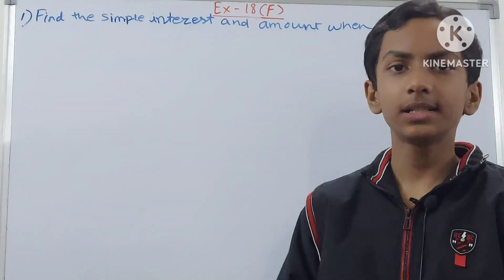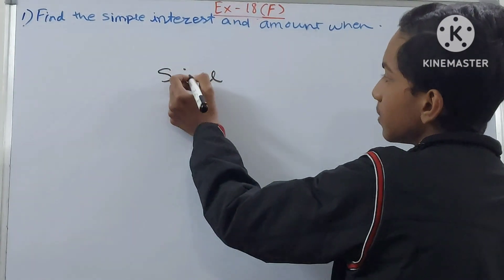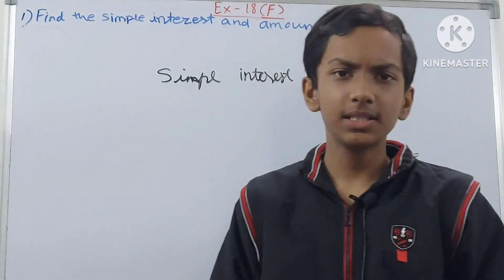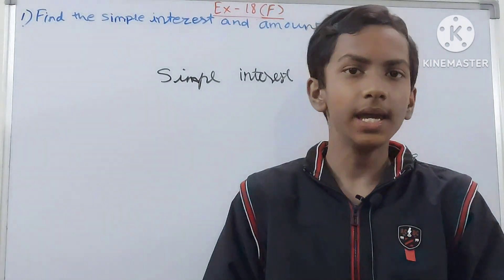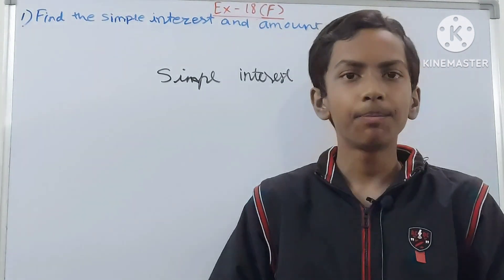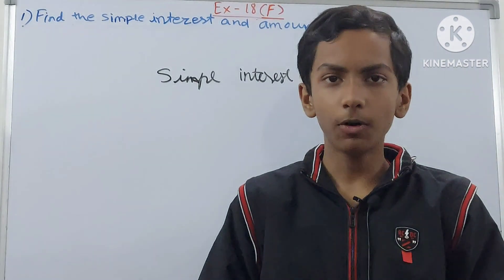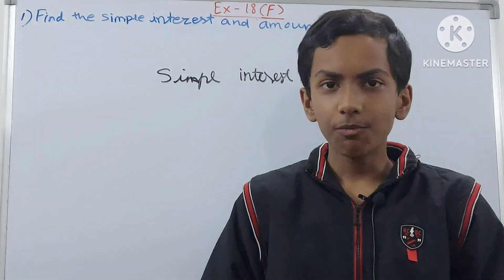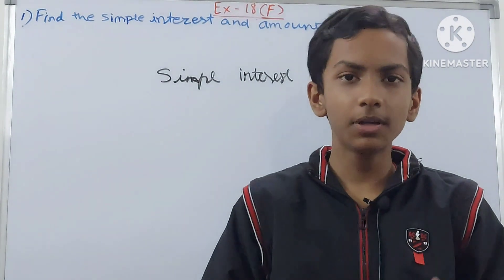For solving this question we must understand one concept — Simple Interest. Suppose you are in need of some money and I lend you rupees 100. That rupees 100 which I am lending to you becomes the principal amount. This is the amount I am giving you for the task you need money for. Now when I give you money, I'll think of my profit as well.